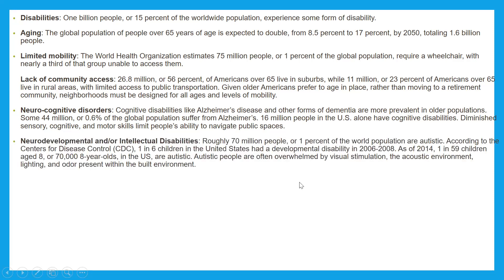On neurodevelopmental and/or intellectual disabilities: roughly 70 million people, or 1% of the world population, are autistic. According to the Centers for Disease Control, one in six children in the United States have a developmental disability. As of 2014, one in 59 children aged eight — or 70,000 eight-year-olds in the U.S. — are autistic. Autistic people are often overwhelmed by visual stimulation, the acoustic environment, lighting, and odor present within the built environment.